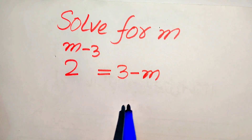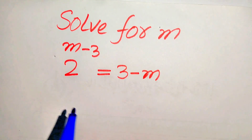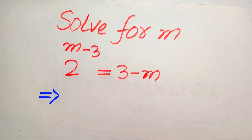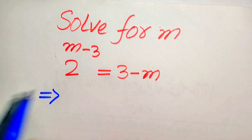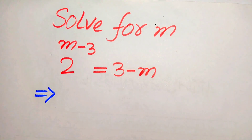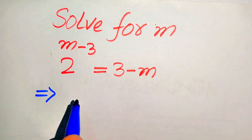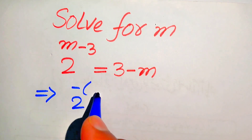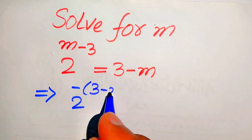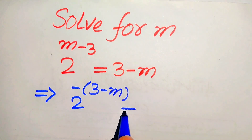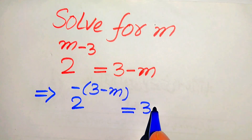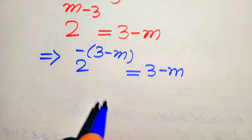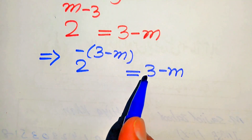The very first thing we are going to do is take the minus sign common from the exponent of this term. When we take the negative sign from here it will be written as 2 to the power of minus times of (3 minus m), is equals to 3 minus m. Now you see here both of these terms become the same.